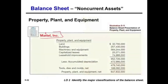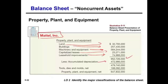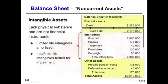Intangible assets are assets that lack physical substance and are not financial instruments — they're not stocks or bonds and they lack physical existence. Examples include goodwill, patents, trademarks, franchises, and copyrights. A patent is an idea — especially important for pharmaceutical companies. Trademarks have market value: when someone sees the Apple logo, they trust the product. A franchise like McDonald's or Subway builds consumer trust. Copyrights protect authors' works. Certain intangibles have limited life and are amortized; others have unlimited life and are tested for impairment. Goodwill has unlimited life. Amortization is the same concept as depreciation but applied to intangible assets.